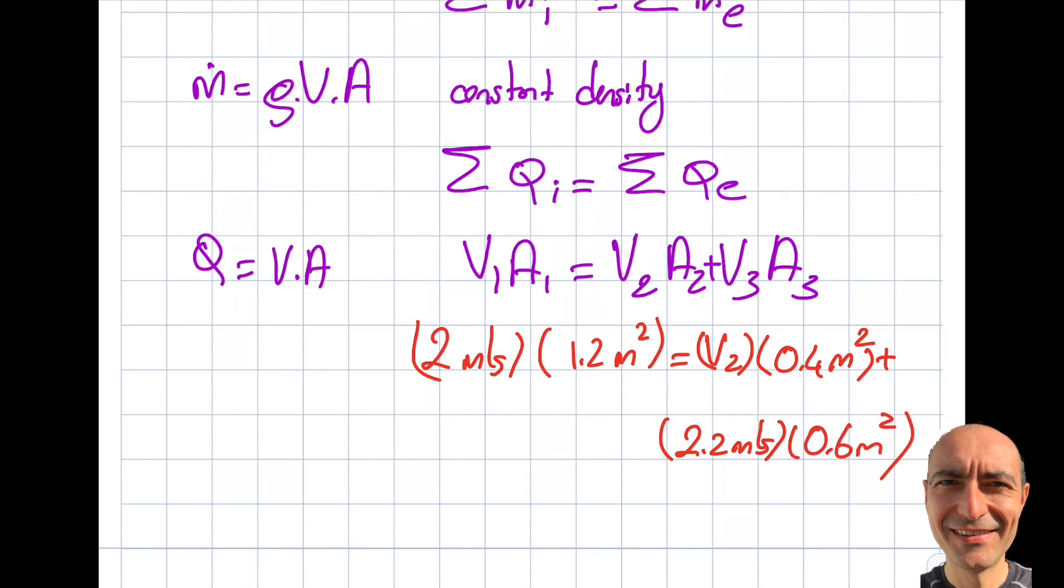So now what I need to do is punch this into my calculator, the specific calculator that you are allowed to bring into the FE. And I will be able to get myself V2 as 2.7 meters per second.